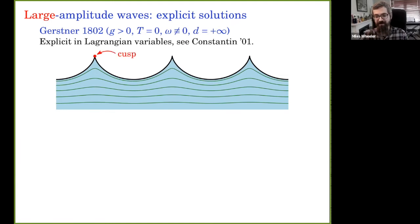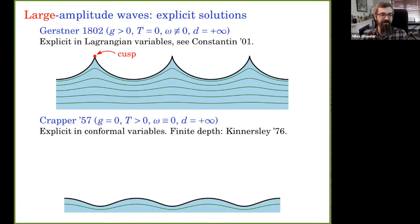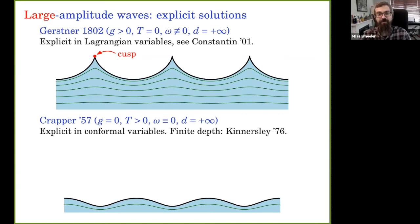The tallest Gerstner wave has crests getting steeper and steeper until you get a cusp at every crest. Jumping forward a century and a half, the next important family of explicit solutions are those found by Crapper in the 1950s — really very few explicit solutions exist, and this slide is essentially it. Unlike Gerstner waves, Crapper waves have surface tension but no gravity and no vorticity. They're explicit not via the flow map but via a conformal mapping describing the domain.